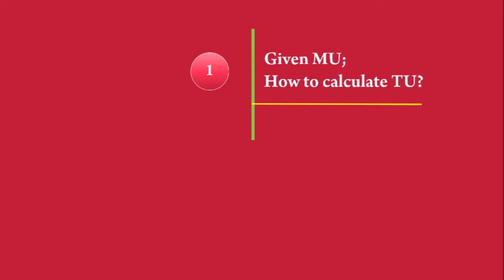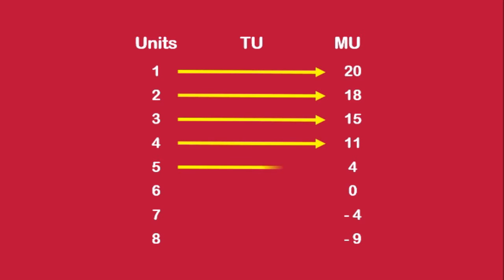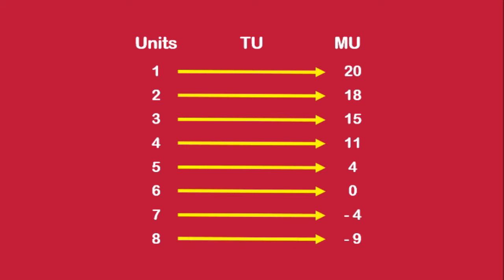We shall discuss the first aspect. Look at this Marginal Utility Schedule. It shows how much utility a consumer derives from each unit of a commodity — in other words, the utility contributed by each unit of a commodity. Using this information, we are going to calculate Total Utility.